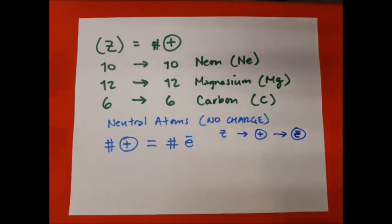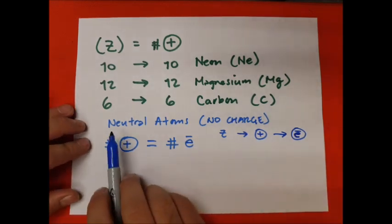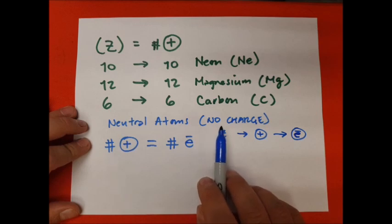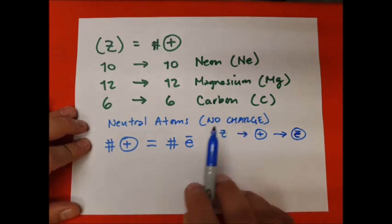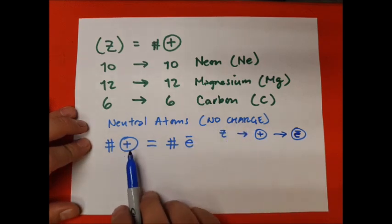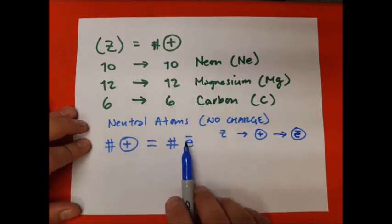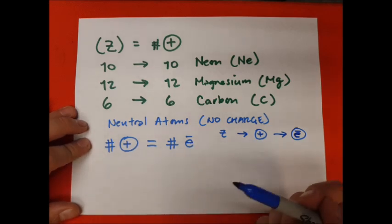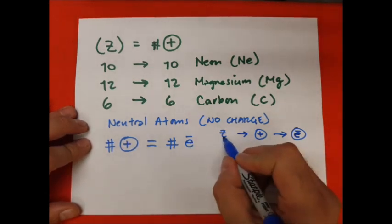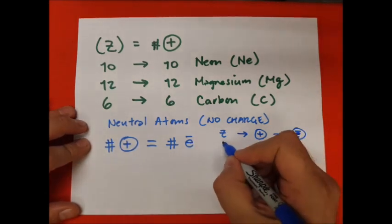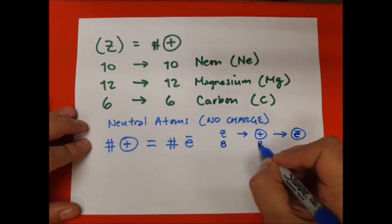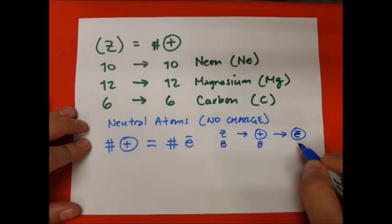When speaking about neutral atoms — atoms that don't have a charge — the number of protons is going to be equal to the number of electrons. So if I have an atom with an atomic number of 8, that means I have 8 protons and 8 electrons. That's for neutral atoms.